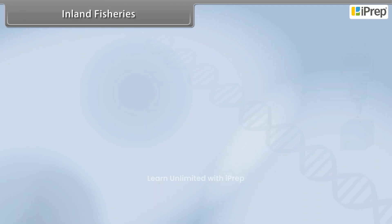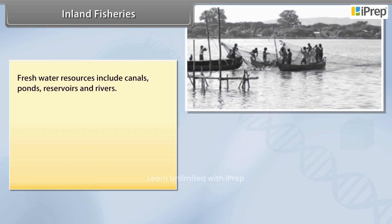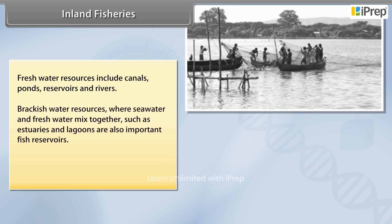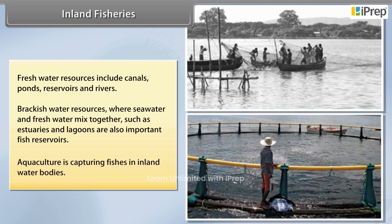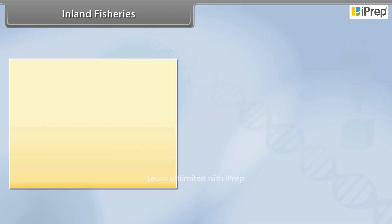Inland fisheries freshwater resources include canals, ponds, reservoirs, and rivers. Brackish water resources, where seawater and freshwater mix together, such as estuaries and lagoons, are also important fish reservoirs. Aquaculture is the capturing of fishes in inland water bodies.